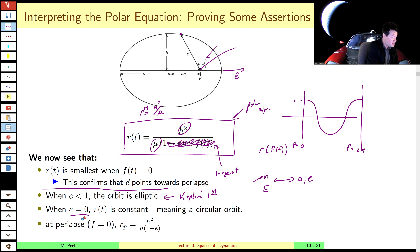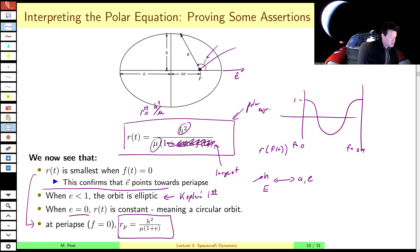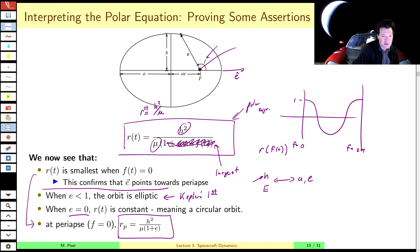We can also extend this by plugging in f equals zero to obtain an expression for the distance of closest approach on the orbit, which is h²/μ divided by (1 + e) for an elliptic orbit. This actually holds also for a hyperbolic orbit as well as a parabolic orbit. So a couple of easy relationships we can get right off the bat just by looking at the polar equation.